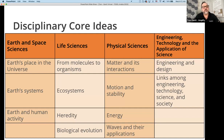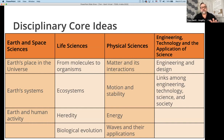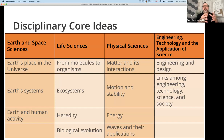We have the four areas of the disciplinary core ideas: earth and space science, life science, physical science, and engineering and technology. Those are broken down by subdivisions like earth's place in the universe, from molecules to organisms, and engineering design. These disciplinary core ideas identify what's most important at each grade level. Think of the DCI as the content. How we deliver that content is where we bring in the other two dimensions. A lot of teachers get stuck in this one dimension only.